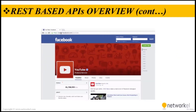One of the best ways to show the similarities between a REST API call and loading a normal web page is Facebook's Graph API. For example, when you browse YouTube's Facebook page at facebook.com/YouTube, we are all familiar with what a Facebook page looks like — it shows how many likes that YouTube page has and things like that.